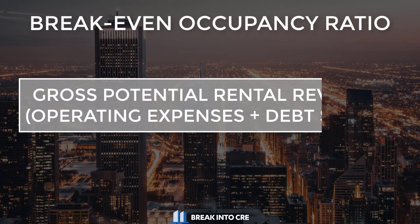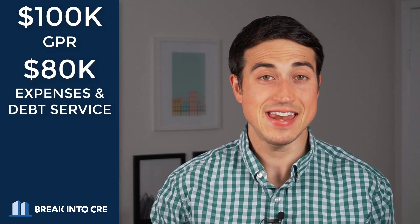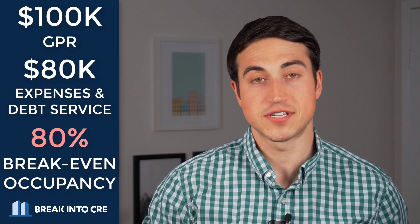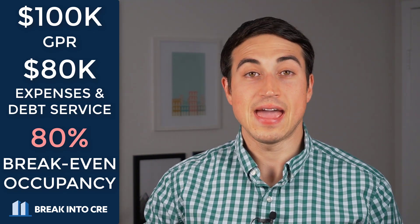To calculate this, the calculation is simple. You take your gross potential rental revenue assuming the property is 100% occupied, then divide that by the sum of your total ordinary operating expenses and your debt service. The result is your break-even occupancy ratio. For example, if your gross potential rental revenue is $100,000 and your total operating expenses plus debt service is $80,000, your break-even occupancy percentage is 80% — meaning the property needs to be at least 80% occupied with 80% of tenants paying rent to be cash flow neutral or positive.